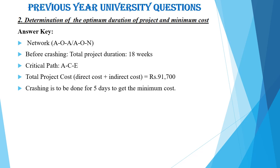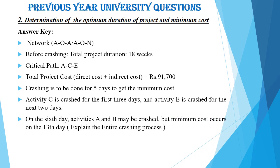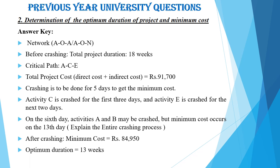The crashing is to be done for five days to get the minimum cost. Activity C is crashed for the first three days and activity E is crashed for the next two days. On the sixth day, activity A and B may be crashed, but minimum cost occurs on the 13th day. You have to explain the entire process of this crashing. Since it is asked for 15 marks, mention each and every step. After crashing, the minimum cost is obtained as Rs. 84,950 and the optimum duration is obtained as 13 weeks. You also have to draw a time-cost trade-off graph showing time versus cost clearly.